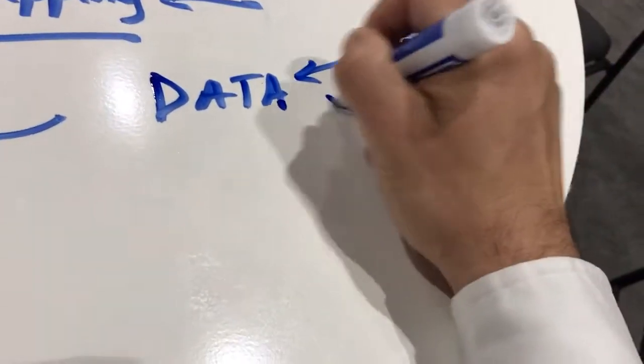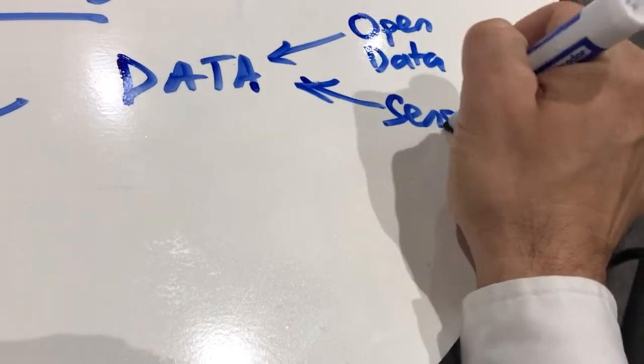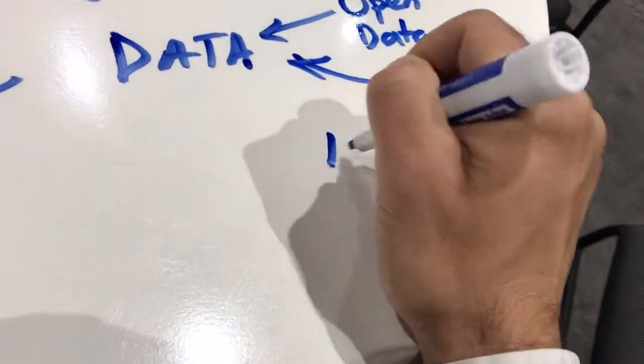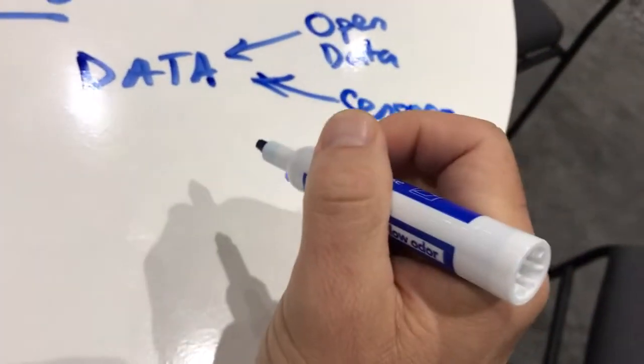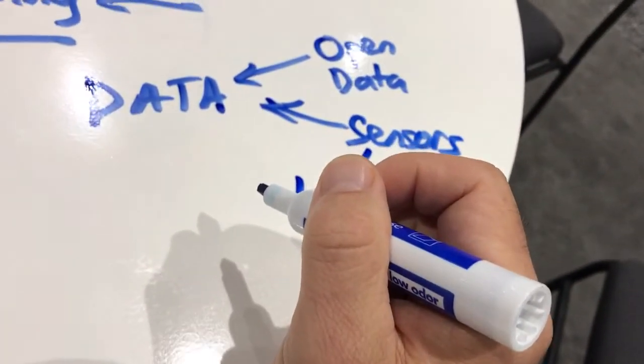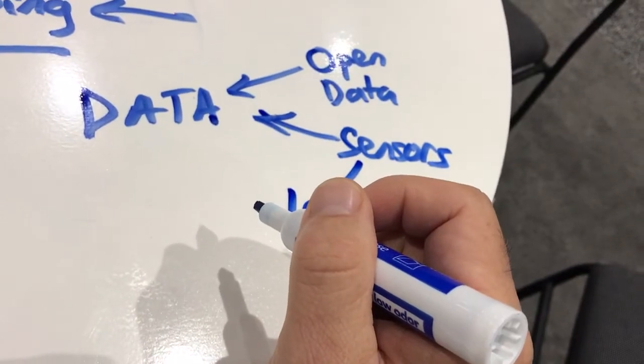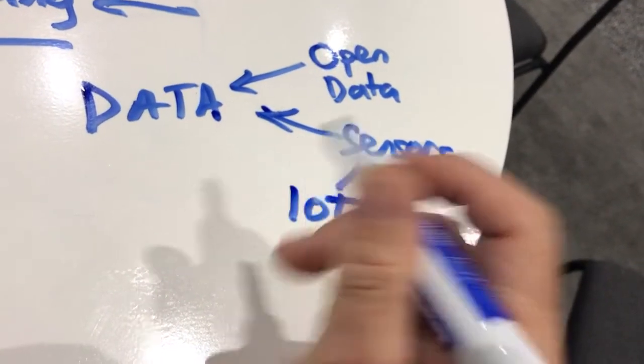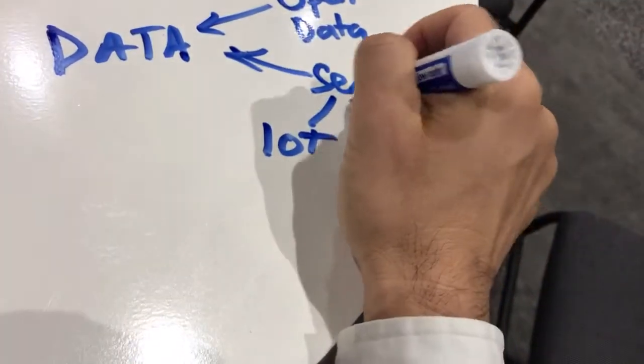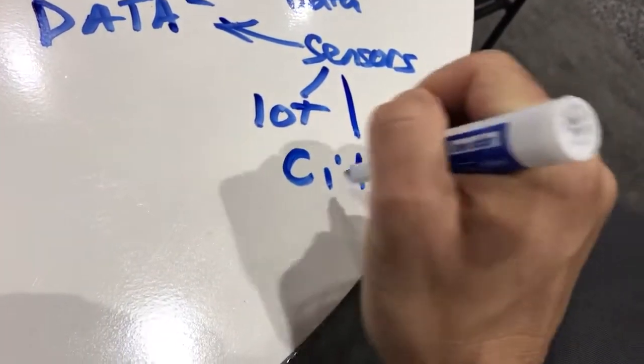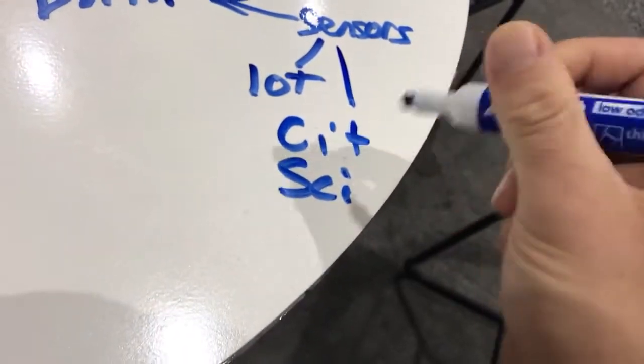And then also, sensors from the internet of things. So increasingly, you know, parking spaces, weather feeds, soil moisture, traffic, stream gauging stations, etc. And also citizen science. Citizens as sensors.